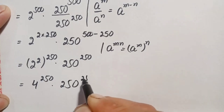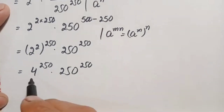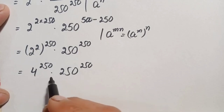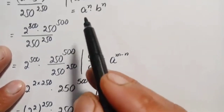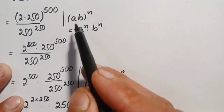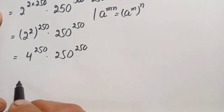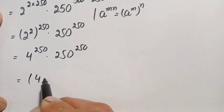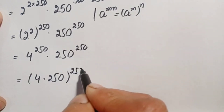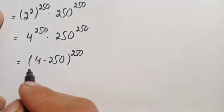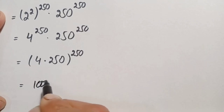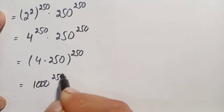We now have 4 raised to power 250 times 250 raised to power 250. These two numbers have the same power, so we use the same-power exponential identity: we multiply the bases and take the power common. This gives us 4 times 250, raised to the power 250. And 4 times 250 is simply 1000, so this becomes 1000 raised to power 250.